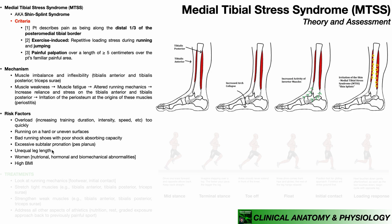Unequal leg length is also a risk factor. Women are at higher risk as well — not because of the physical state of being female, but due to associated factors in sports like running, jumping, and track and field. Women in those sports are more likely to have nutritional deficits, which can lead to hormonal imbalances. Combined with inadequate resistance training and insufficient flexibility work for muscles like the gastrosoleus, this can predispose them to biomechanical abnormalities leading to medial tibial stress syndrome.